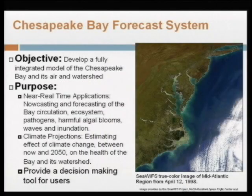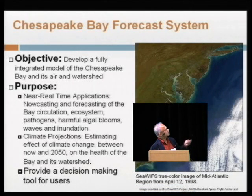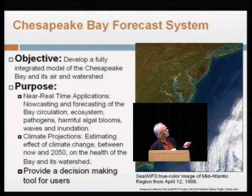The example I'll use is the Chesapeake Bay — it's a prototype we are building. We've already moved it to the Gulf of Mexico and parts of India, so the system can be moved anywhere. The objective is to develop a fully integrated model for any region, producing information from days to decades, covering not just the physical environment but also ecosystems, pathogens, harmful algal blooms, waves, and inundation.